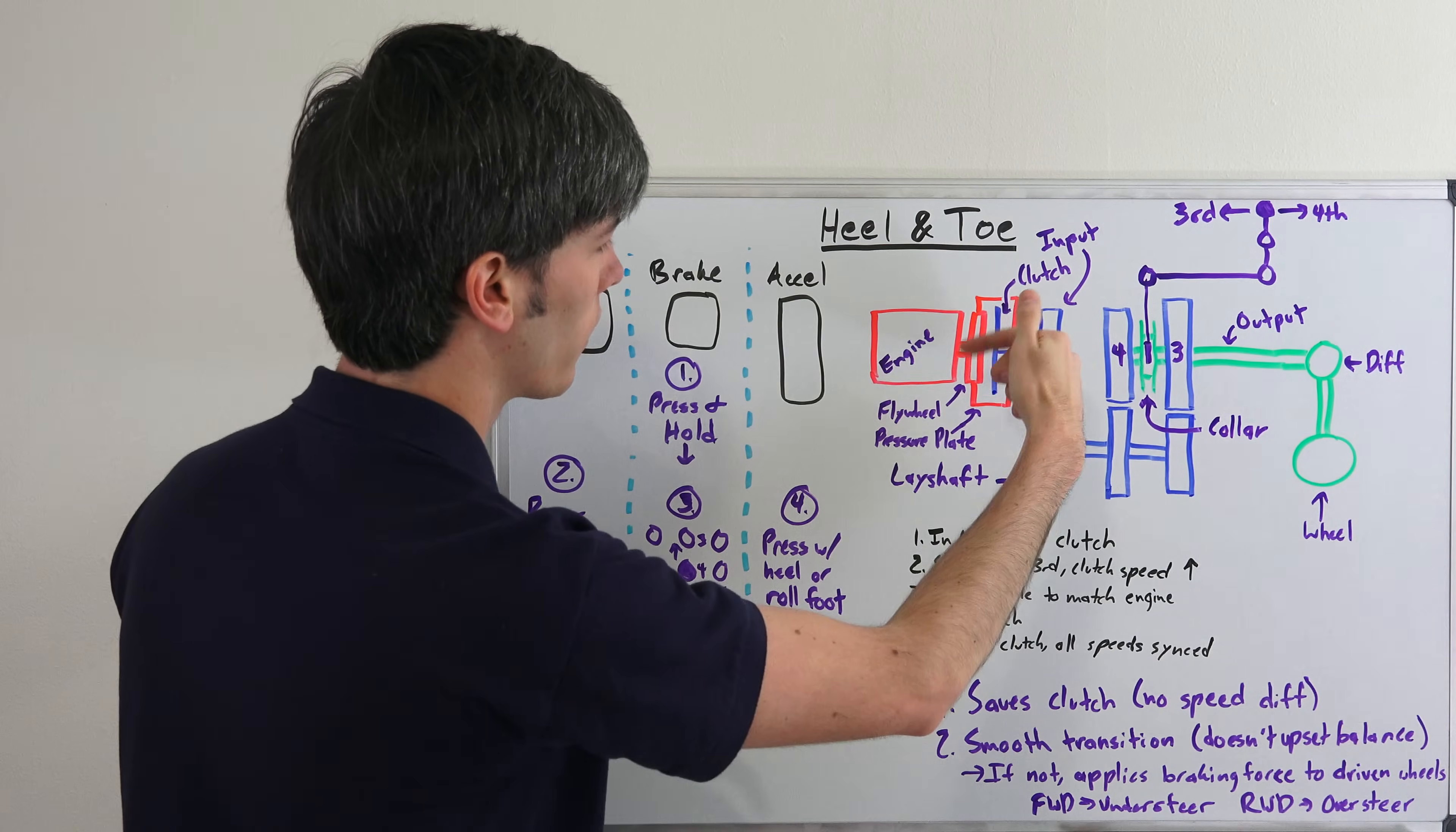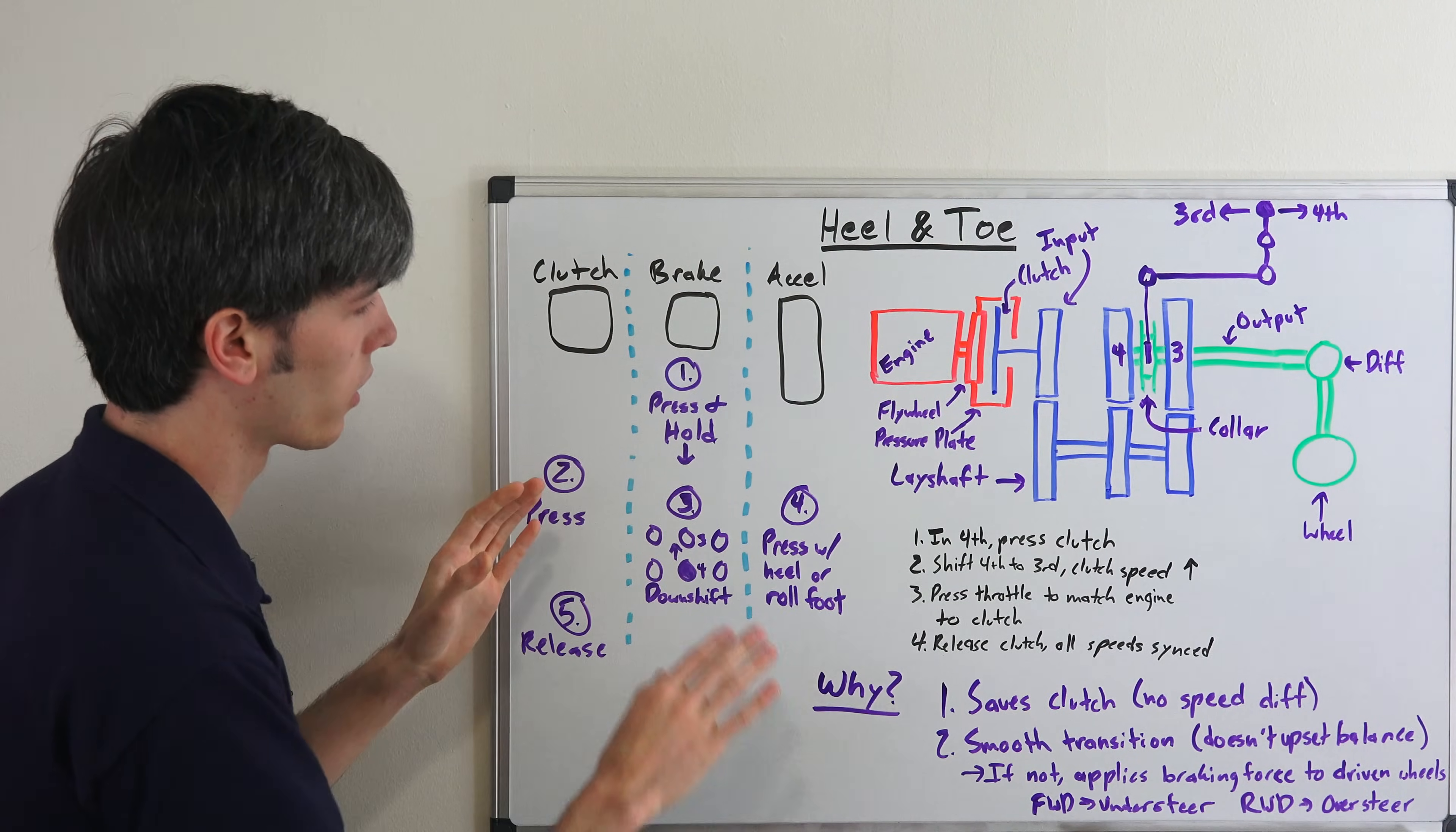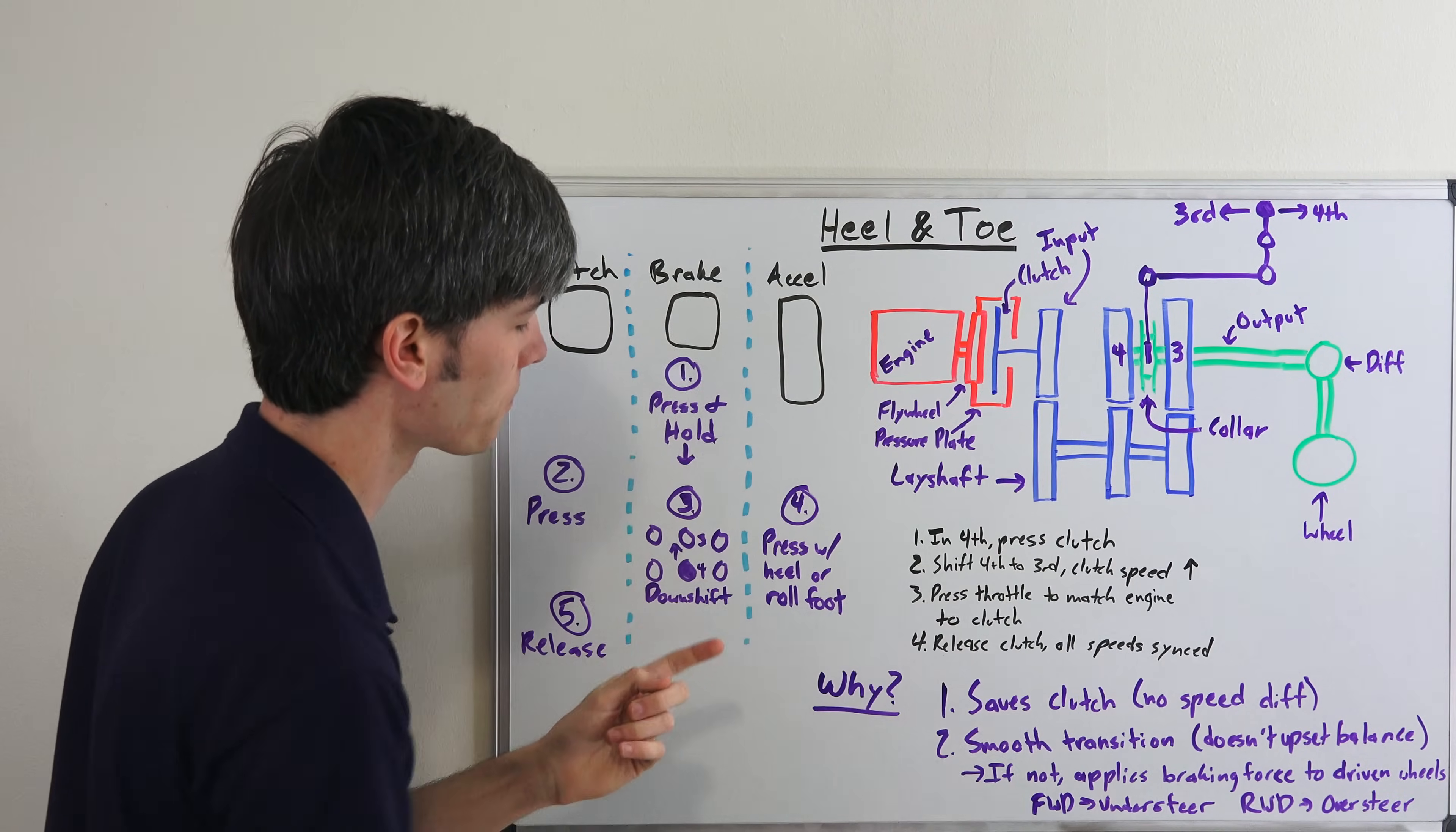So now the clutch is rotating faster than the engine. So you've got this speed which is high because it's connected to the wheels, and then you've got this speed which is low because it's been disconnected from everything. So what you're going to do is roll onto that throttle, bring the engine speed up to the clutch speed so it matches that third gear speed, and then release the clutch and then you have a very smooth transition.